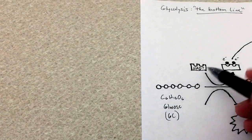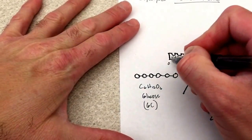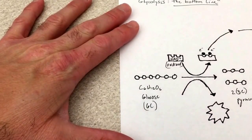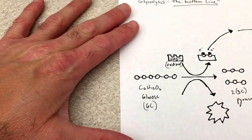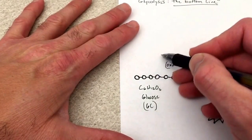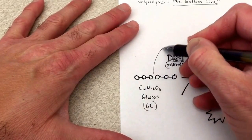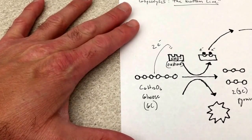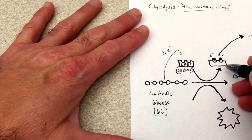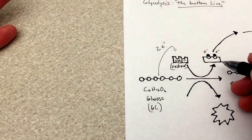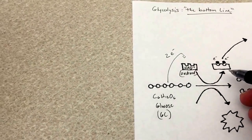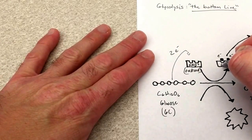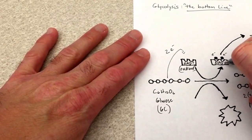So NAD+, this is the oxidized form of this molecule. And when it picks up the electrons, those two electrons, we say that this is a reduction reaction. Now remember reduction reactions? Reduction is gaining of electrons. So now this reduced molecule is NADH.